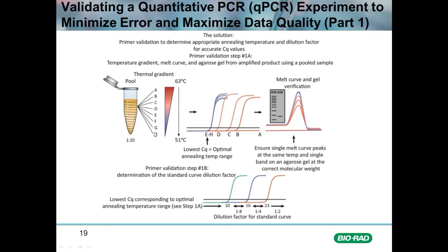Within this optimal temperature range, it is excellent experimental protocol to take one of the amplified samples and run it on a gel to assess that the product is running at the correct molecular weight. Cutting this band out and submitting the amplicon for sequencing is an excellent approach to fully assure the right product is being amplified. If this is a SYBR-based assay, a melt curve should also be run to assess a single peak, and the gel and melt curve should both coincide — giving a single band on the gel and a single peak on the melt curve.